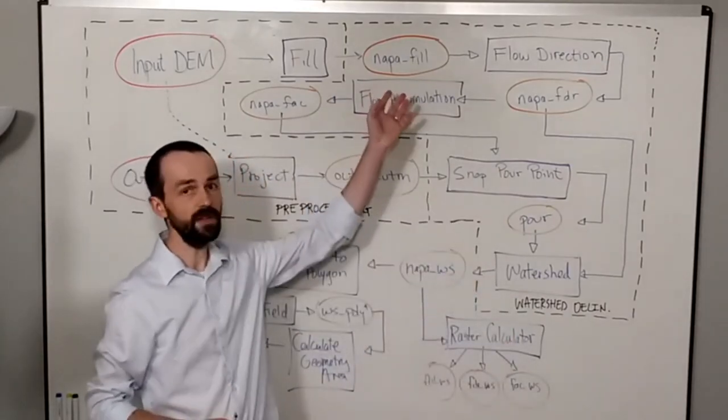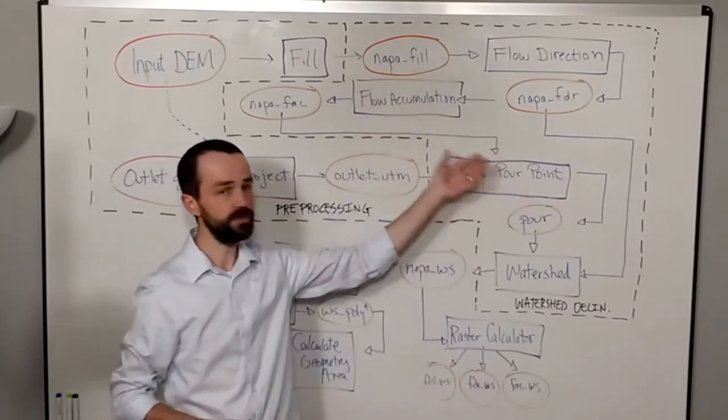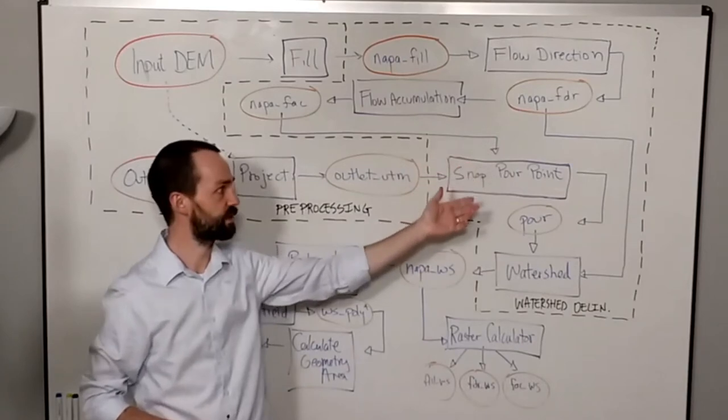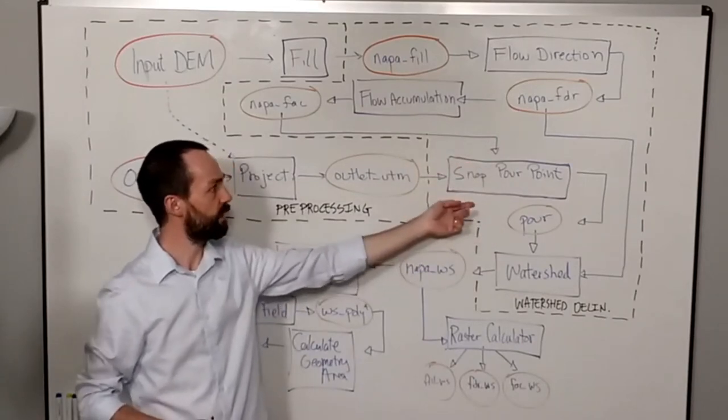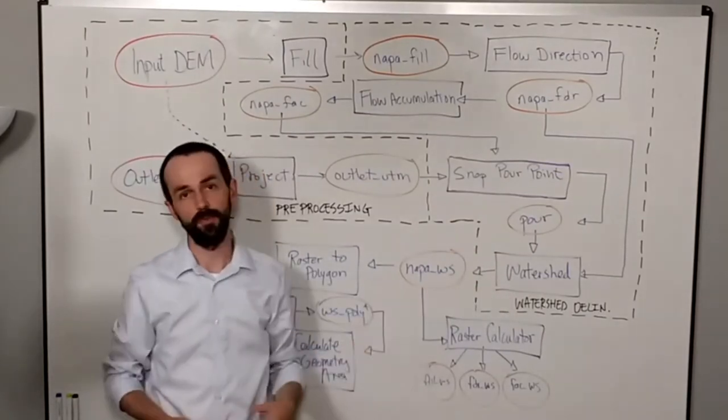which takes our filled elevation, goes through the accumulation and flow direction, takes our port points which has been projected, and creates our delineated watershed output.